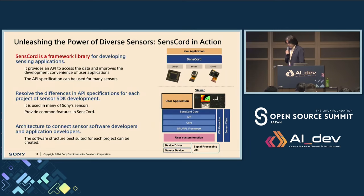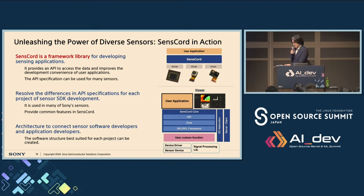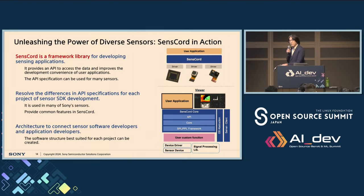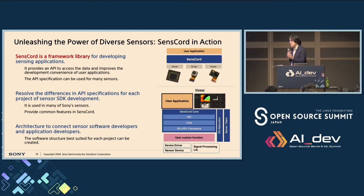Another important software component for us as a sensor company is SenseCode. SenseCode is a framework library for developing sensing applications. By using it, developers get a unified API to access a wide variety of sensor devices. As a sensor company, we have accumulated know-how for addressing sensor devices and have common functionalities to be implemented in libraries. By providing this, we want to accelerate open source developers to create sensor data-based applications.